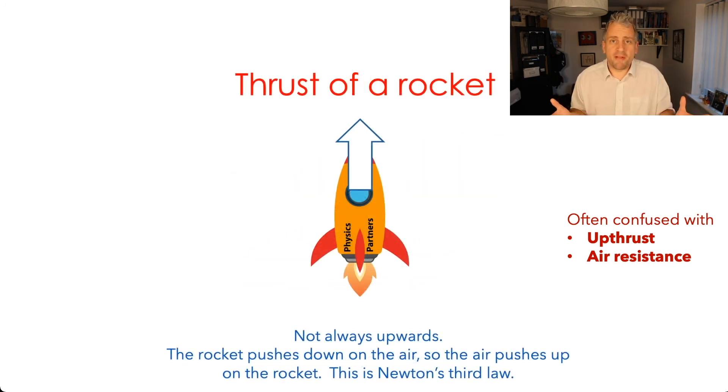We could also think about the thrust of a rocket for example. How does a rocket work? It's not the same as the lift of an aeroplane. A rocket works in space whereas an aeroplane wing wouldn't. So how does the rocket work? Well it's links to Newton's third law. The rocket pushes down on some air particles which means the air particles are pushing up on that rocket. So this one doesn't have to be acting upwards.